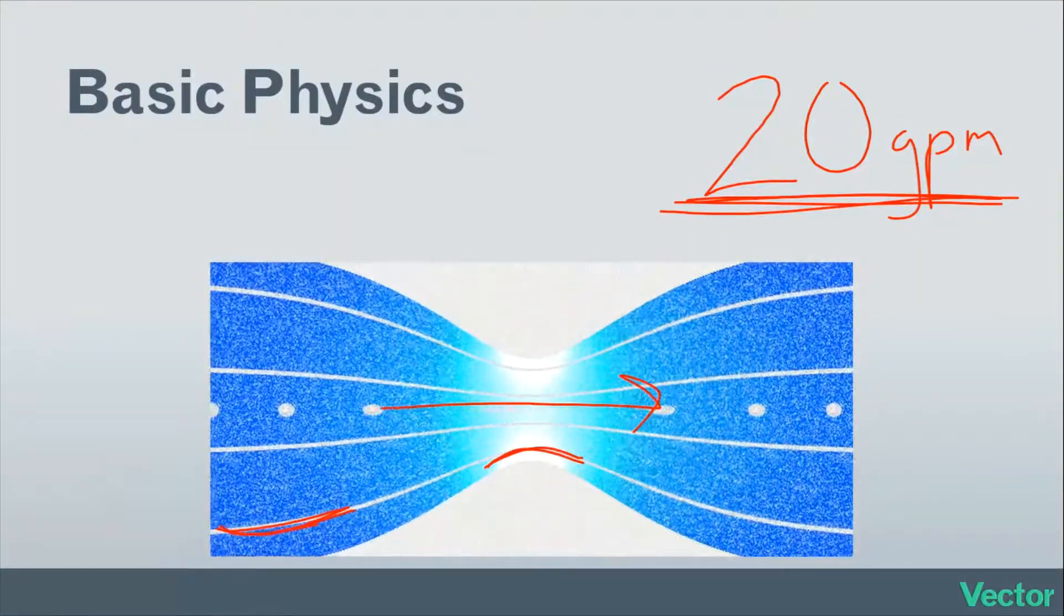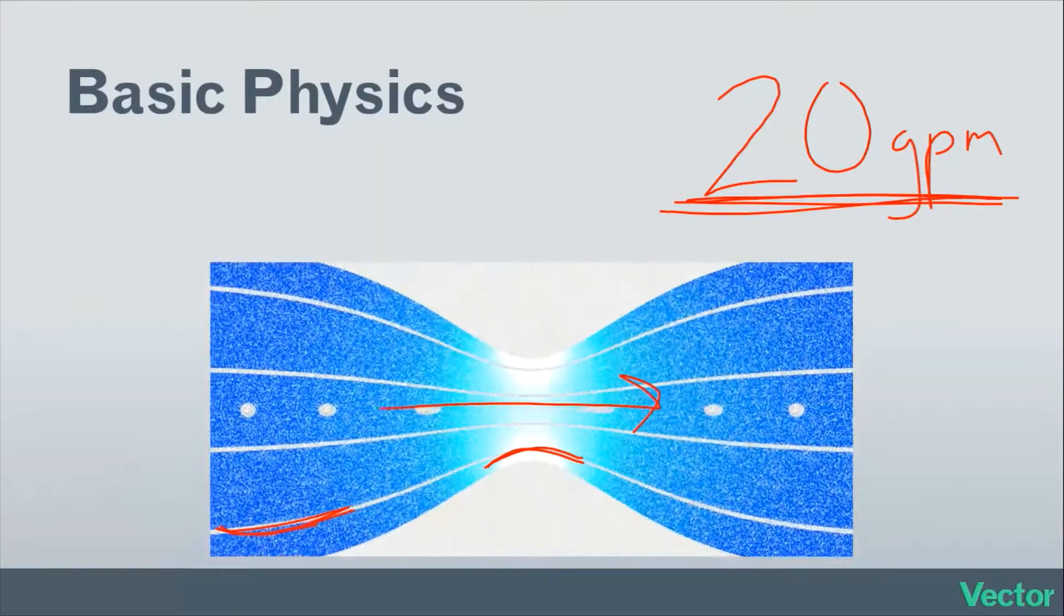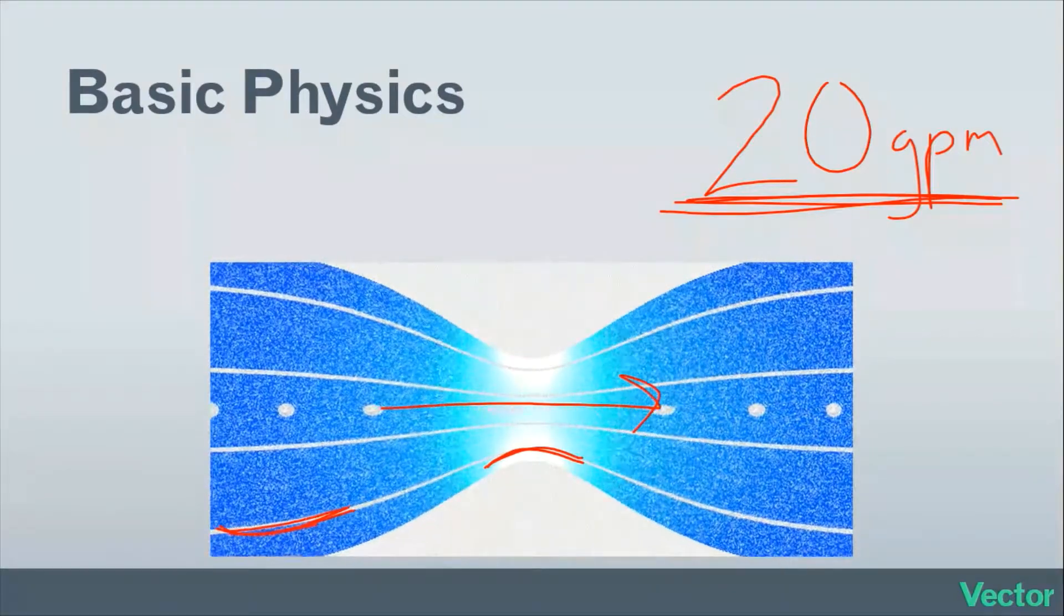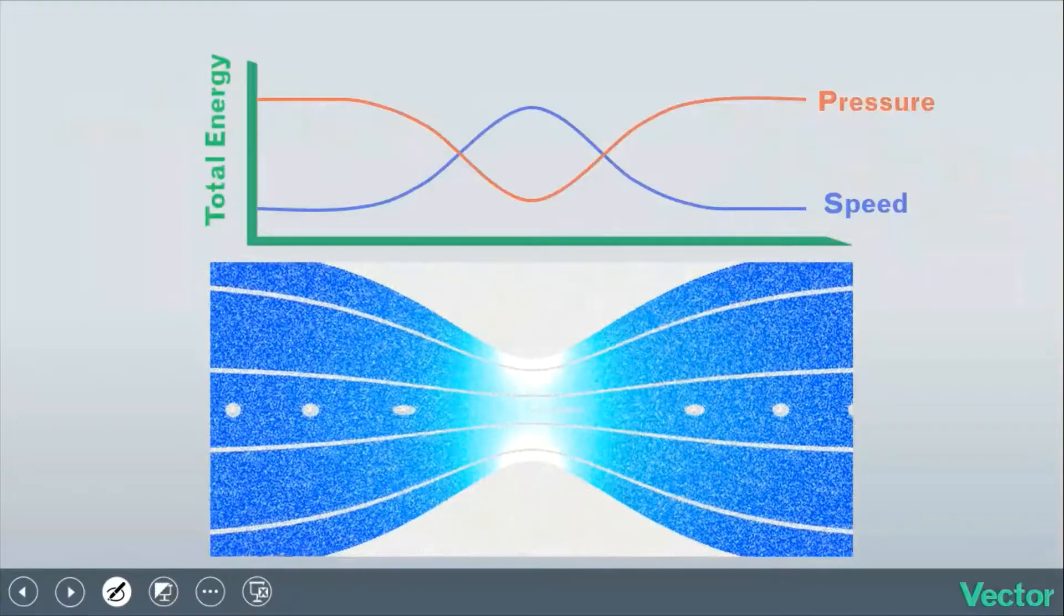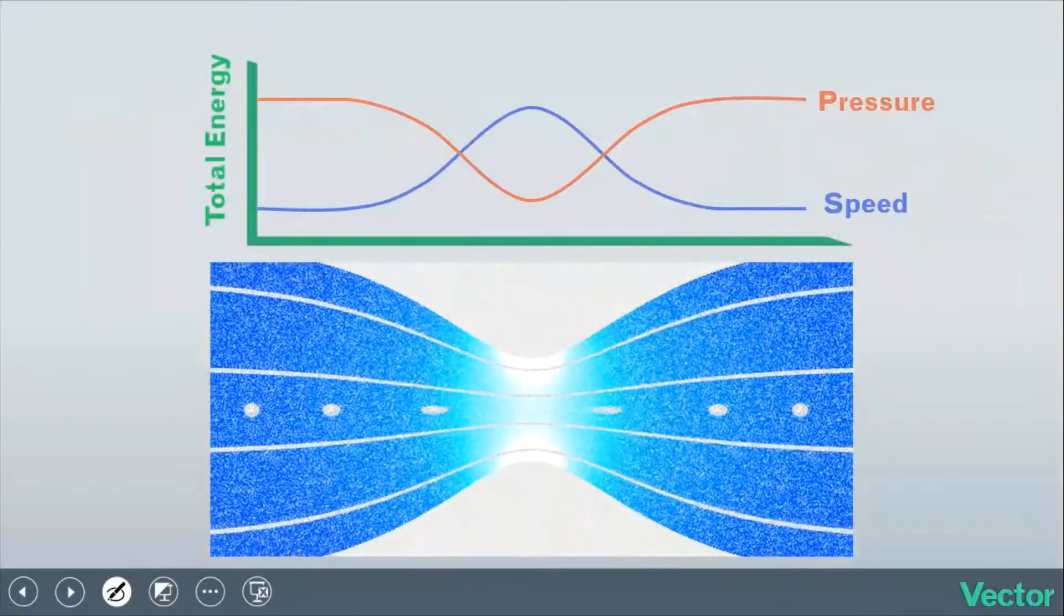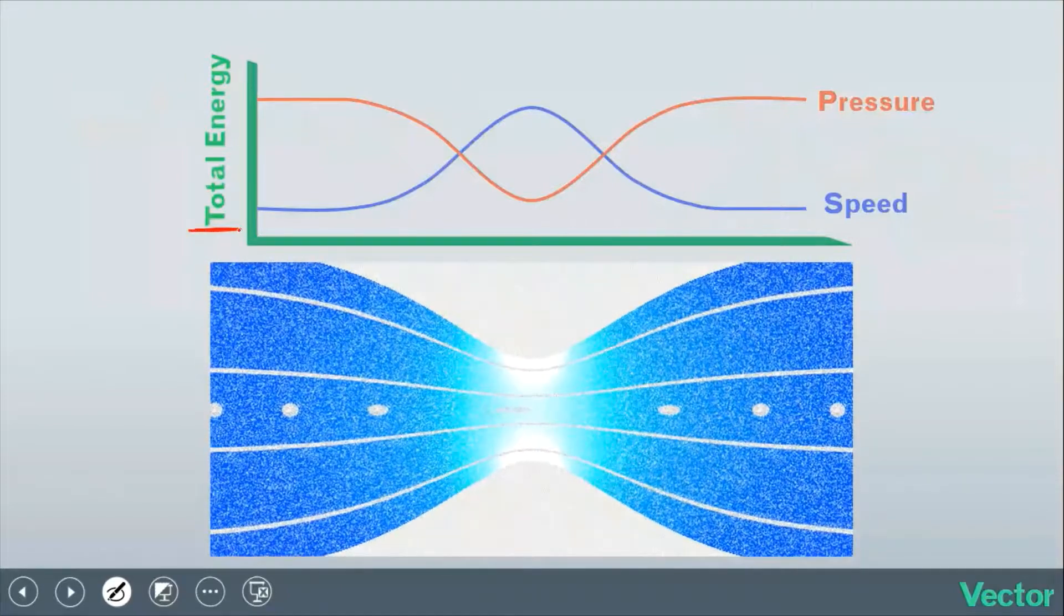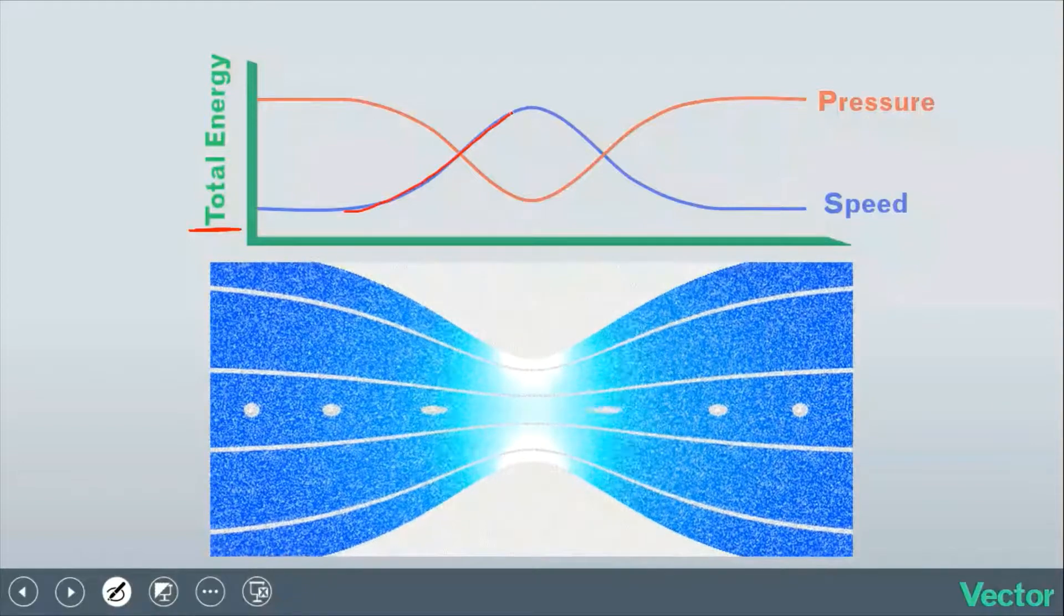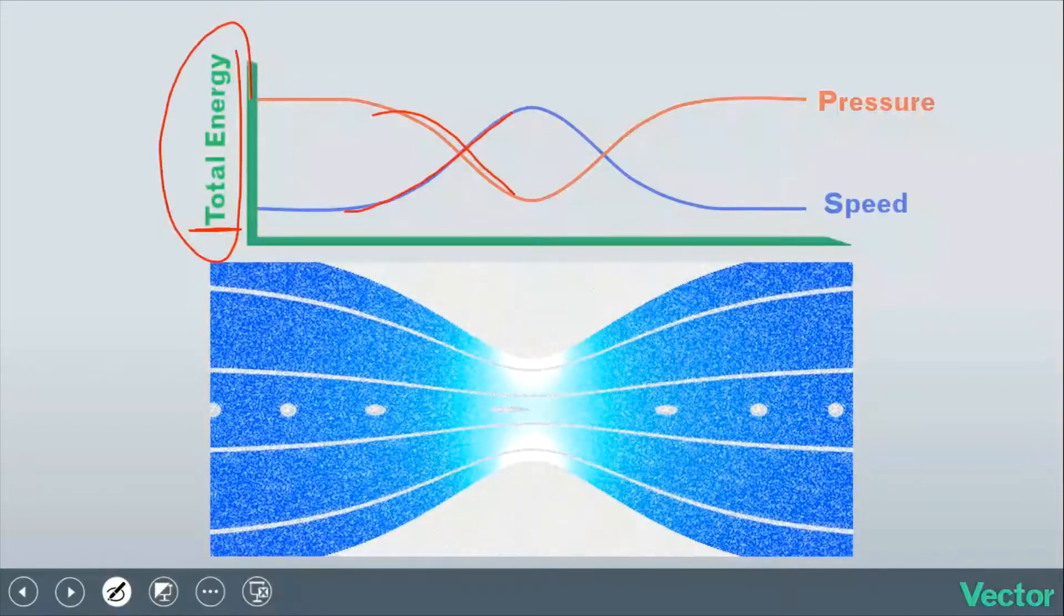An increase in speed is considered an increase in energy, and you can't just increase energy without taking it from somewhere else. We have to borrow that energy from somewhere, so it gets borrowed from the fluid's pressure. As the speed of a fluid increases, the total amount of energy in the system has to remain the same. So as the speed increases, its pressure must decrease so that the total amount of energy in the system remains the same.